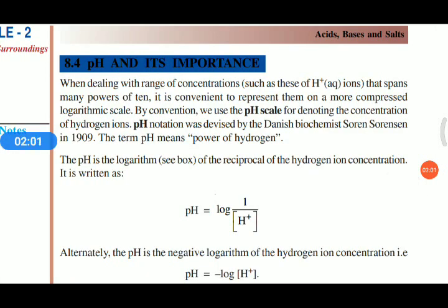Now, we are going to discuss about pH and its importance. What is pH? We know, in the case of acid and base, hydrogen ions play a very important role. In the case of acid, H plus ions. In the case of base, OH minus ions play an important role in producing acids and bases.